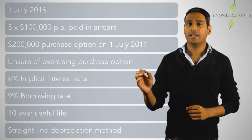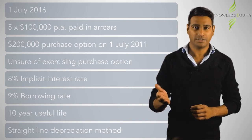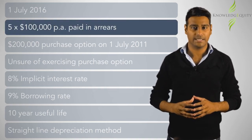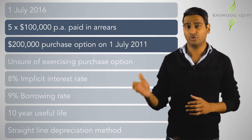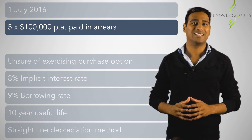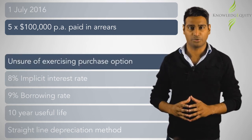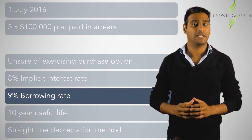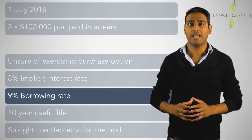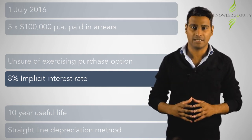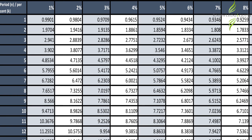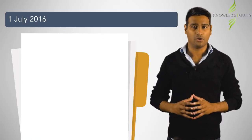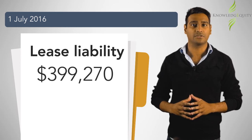The first step would be to calculate the payments that are required under the lease and to then present value that using an appropriate discount rate. Five payments of $100,000 will be included in the calculation of the lease liability. The purchase option of $200,000 will not be included as Harbour Limited is unsure if it will exercise that option. The discount rate would be 8% as this is the rate implicit in the lease. The incremental borrowing rate of 9% would only have been used if the rate implicit in the lease could not have been determined. The present value factor for an annuity for five years at a rate of 8% is 3.9927, hence the lease liability on 1st of July 2016 is $399,270.